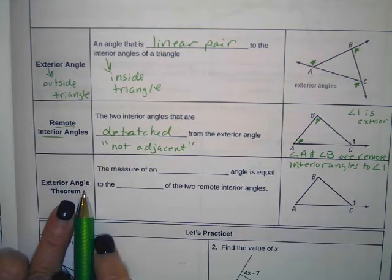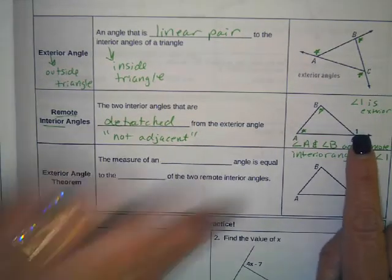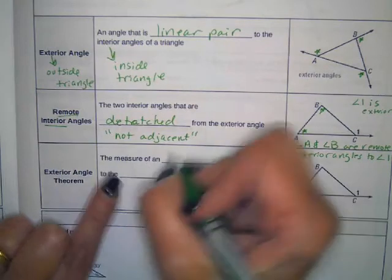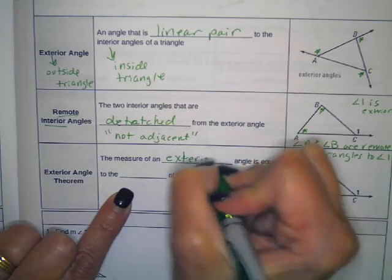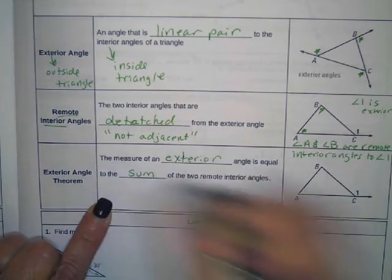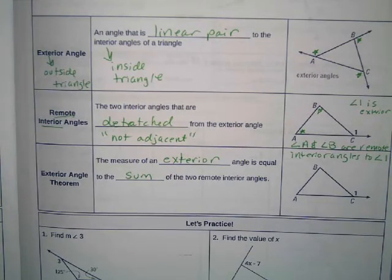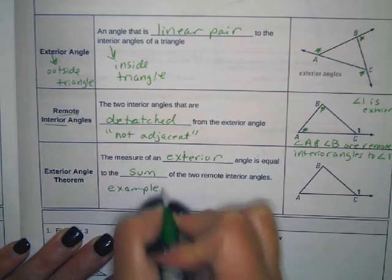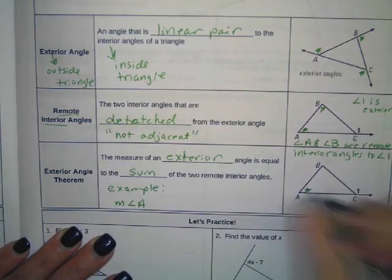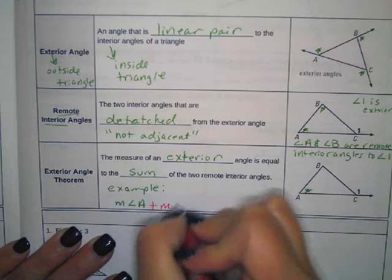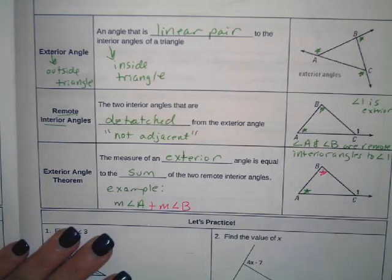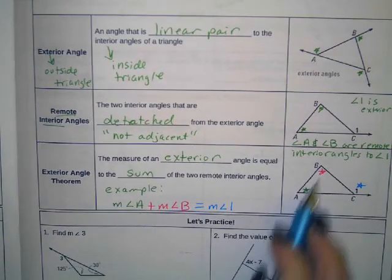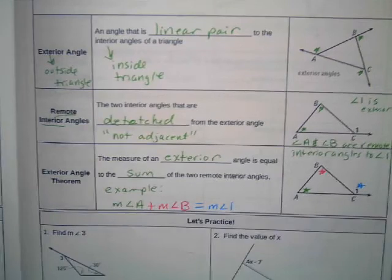Okay, the next one is the exterior angle theorem. So now this, we talked about what an exterior angle is. We talked about the remote interior angles. There's a relationship between these two. And the relationship is that the measure of an exterior angle is equal to the sum of the two remote interior angles. So if we look at this picture, we can state, so this is your example, using the picture, the measure of angle A, which is here, plus the measure of angle B, which is here, equals this angle, which is the measure of angle one. So you can add these two, and it will equal the third angle that's on the outside.